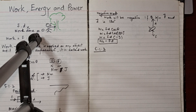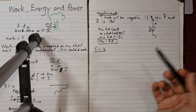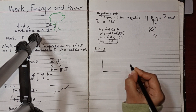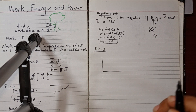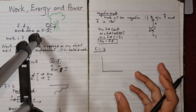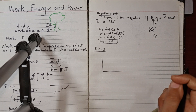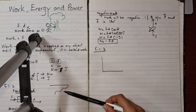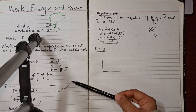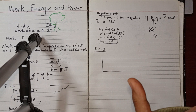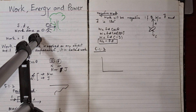For a constant force, the graph will be a straight line, so we can easily find the area. But for a variable force, we need to break it into different segments to find the area under the curve.